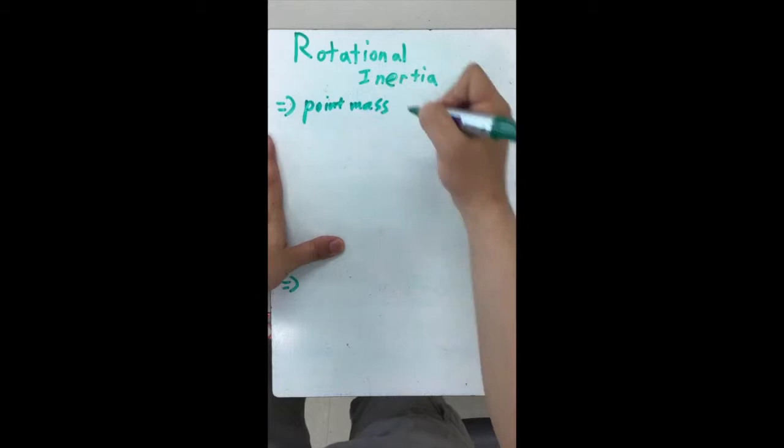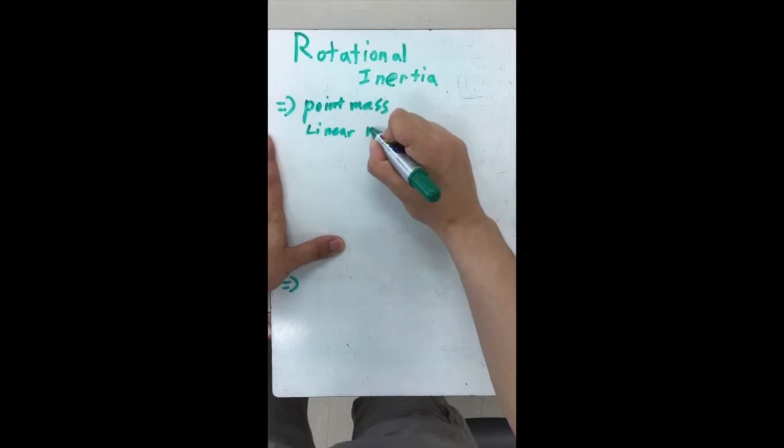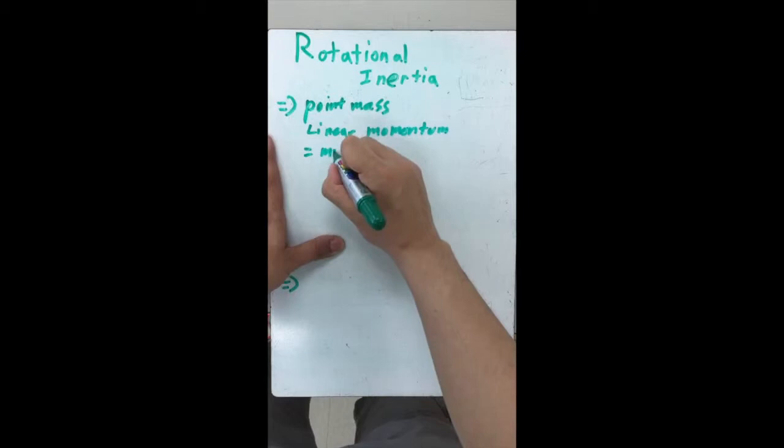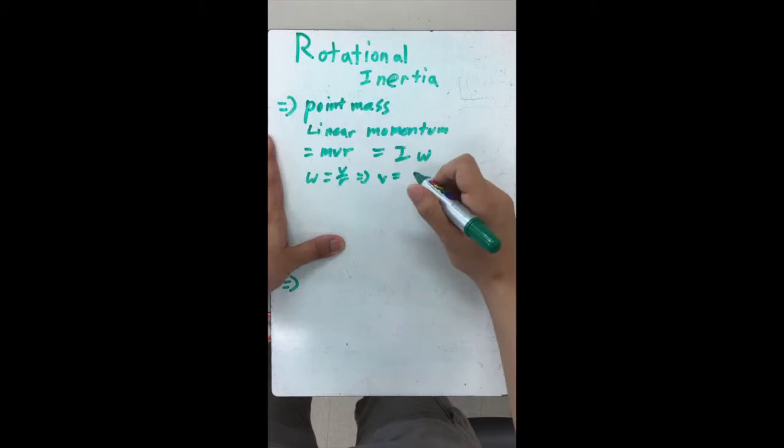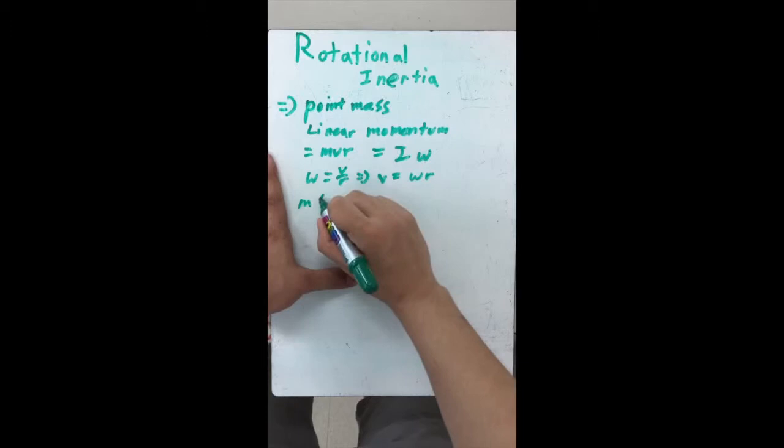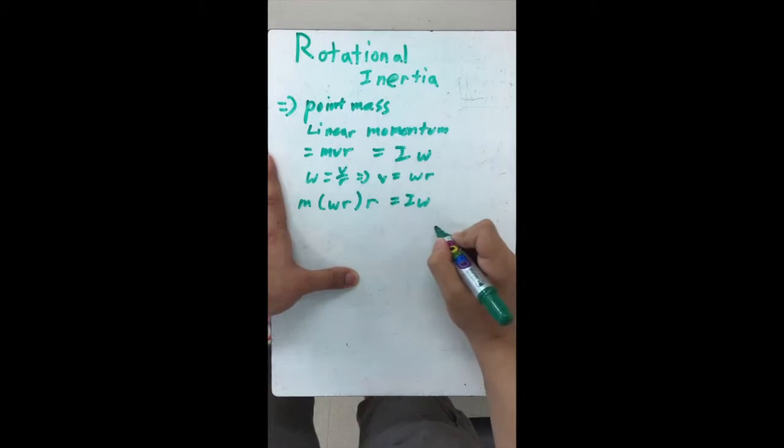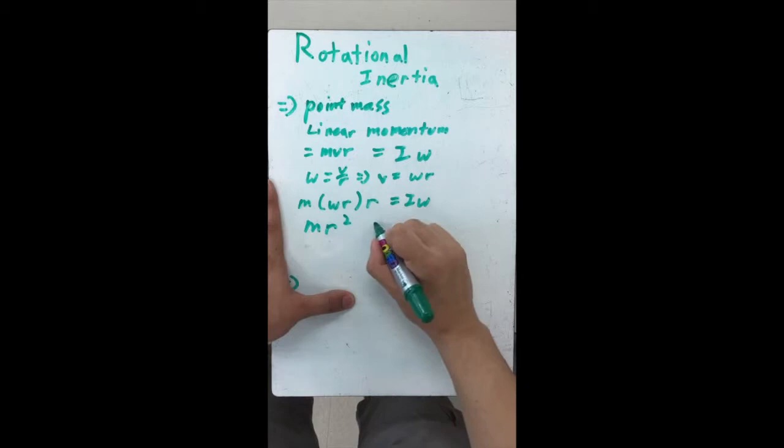In this section I will explain about how rotational inertia works. To start off, I will start with the inertia of a point mass. Two equations will be used about linear momentum: mass times velocity times radius, which is equal to the rotational inertia times omega. Omega is equal to velocity over r, so velocity is equal to omega r. If we put the equations together, mass times omega times radius times radius equals the inertia times omega. And when simplified, mass times radius squared equals the rotation inertia of a point mass.